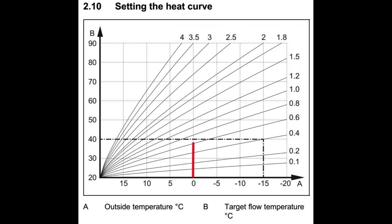For example, for the curve of 0.6 at 0 degrees C outside, we will have a flow temperature of approximately 38 degrees C. And then when it gets to minus 5 outside, we'll have a flow temperature of approximately 41 degrees C. And when it is plus 5 outside, we'll have a flow temperature of approximately 35 degrees C.